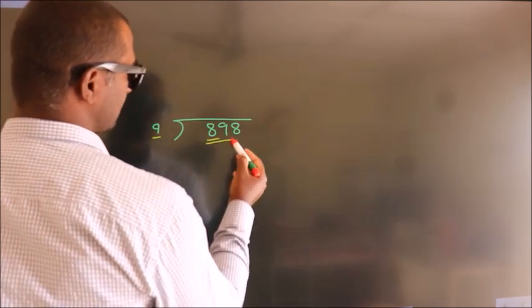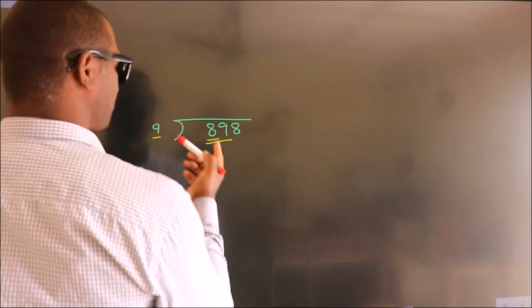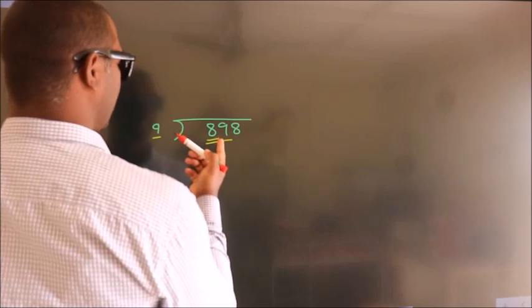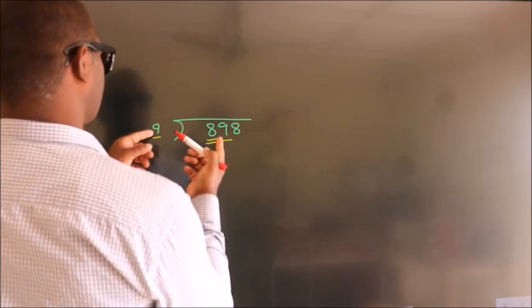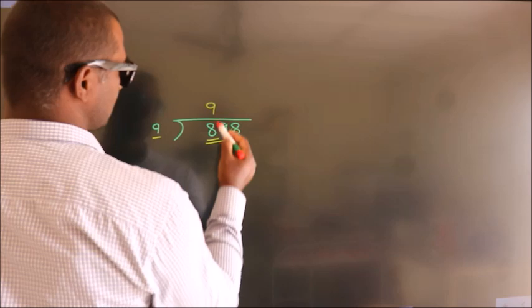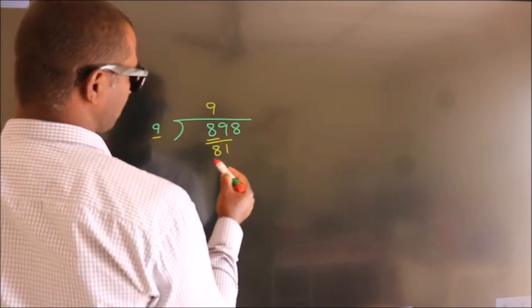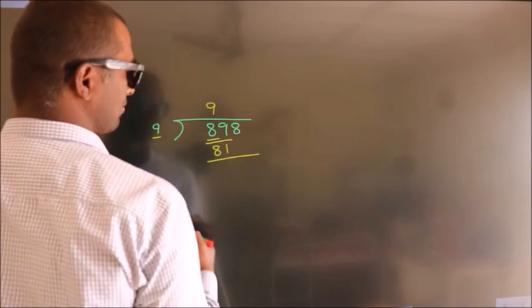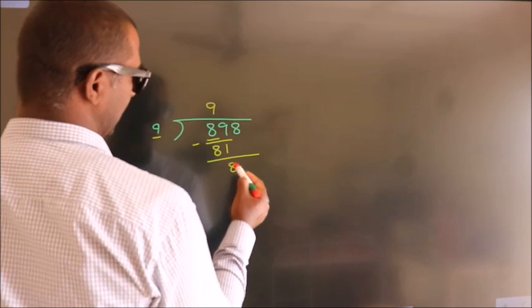So we should take two numbers, 89. A number close to 89 in 9 table is nine 9's are 81. Now we should subtract, we get 8.